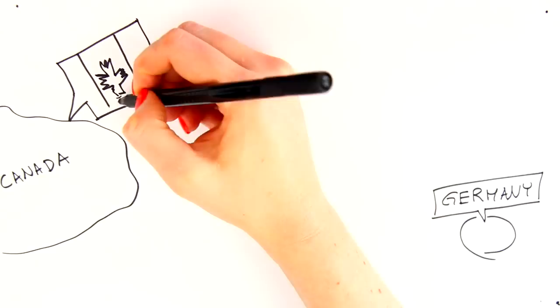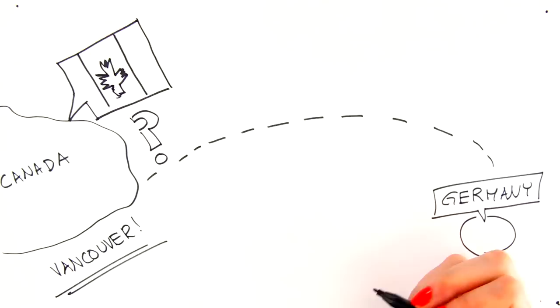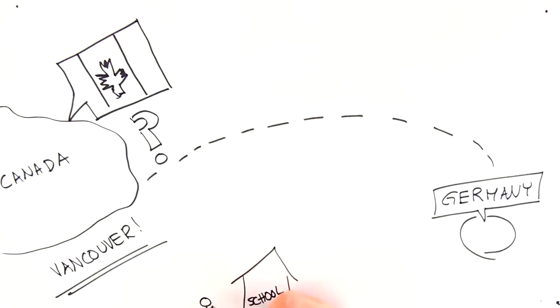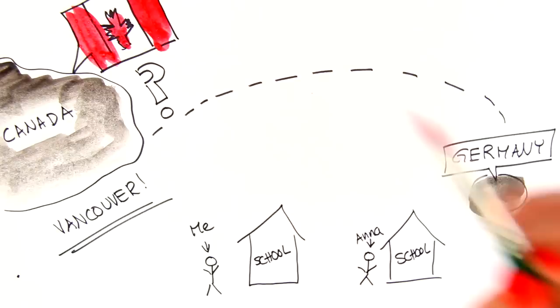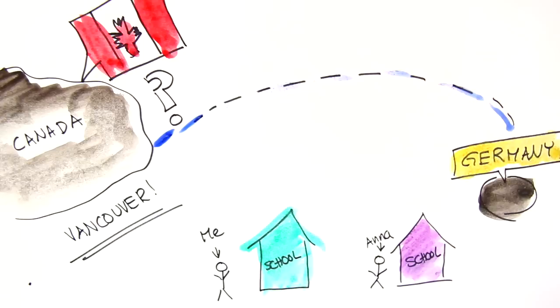But soon it was time to start school in this foreign place and I was so scared. I learned that my sister and I were going to be attending different schools because while she was older and she had to be placed in an ESL class which is English as a second language. And since I was only eight years old then I was just going to be integrated into a regular third grade classroom right along with all the other Canadian kids. I wasn't even going to have my sister Anna beside me for support.